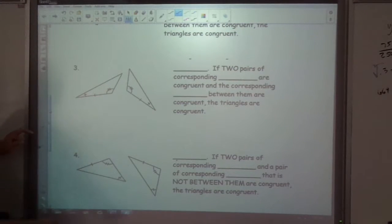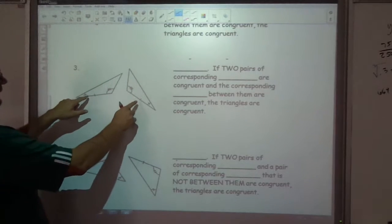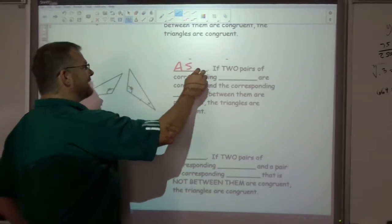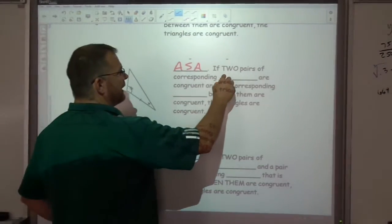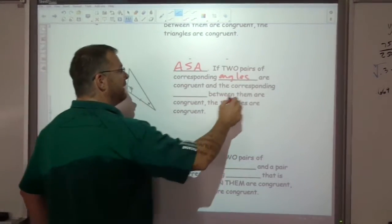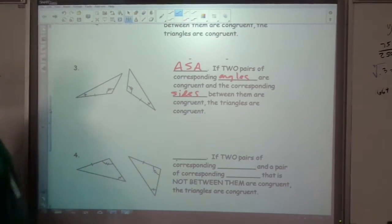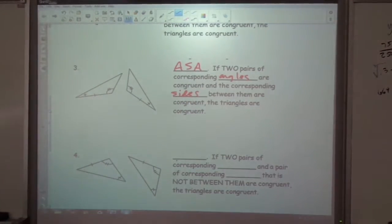The third one is where we have two angles and an equal side in between those. So that's called angle, side, angle. Two pairs of corresponding angles are congruent and the corresponding sides between them are congruent. If that's the case, then triangles are congruent.